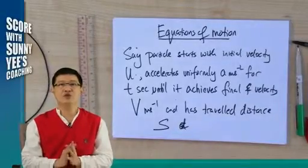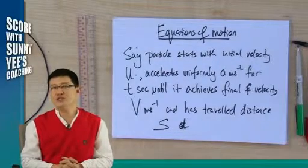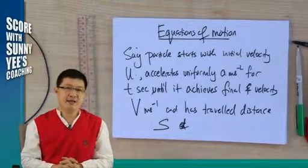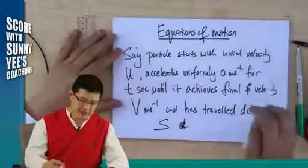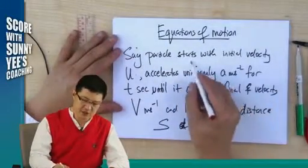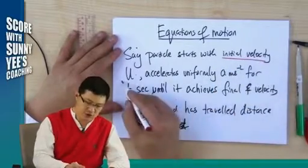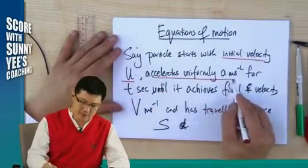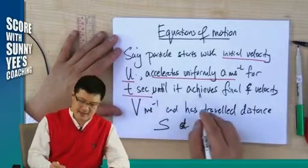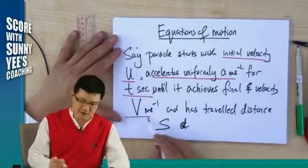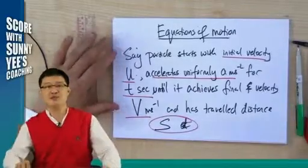Now, we come to the equation of motion. When I say motion, it is meant for straight line. A particle starts with initial velocity U, accelerates uniformly with acceleration A for T seconds until it achieves the final velocity V. And the total distance travelled is S.